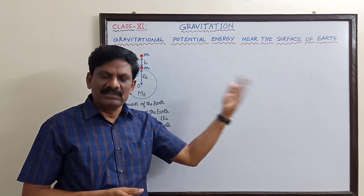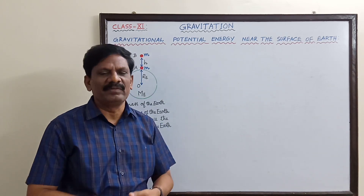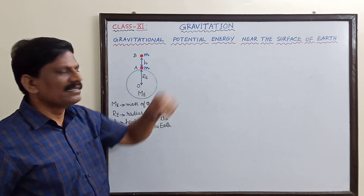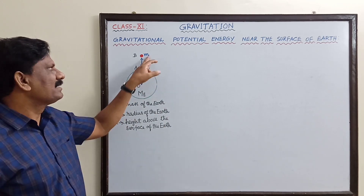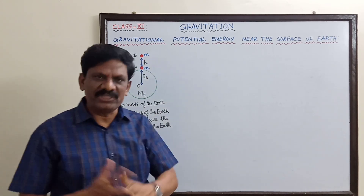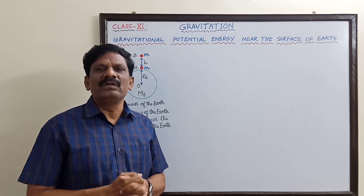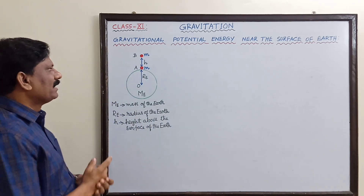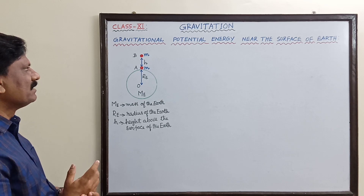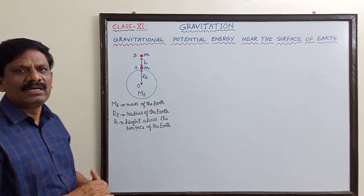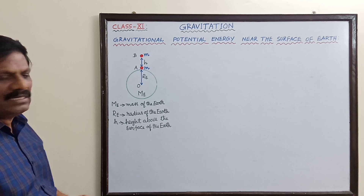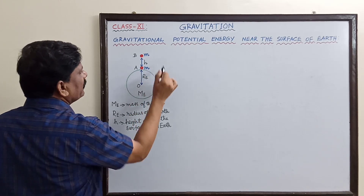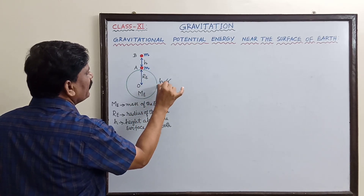We have already derived in the previous chapter on Work, Energy and Power that the potential energy near the surface of the Earth at height h for mass m is equal to mgh. We are going to derive this in a different way. I have chosen two points: A on the surface of the Earth and B at height h above it, where h is very much less than the radius R_e.